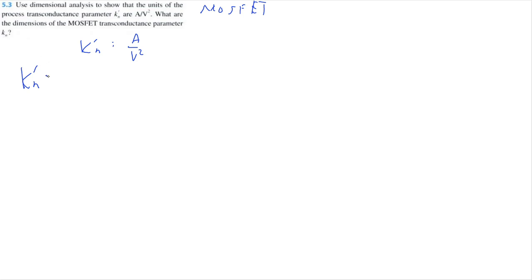Our transconductance kn' is equal to μn multiplied by Cox. I will make a lecture video all about MOSFET devices that explains what all these parameters are, but for these problems I'm going to be focused on the mathematics.